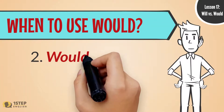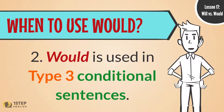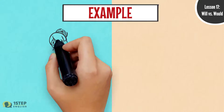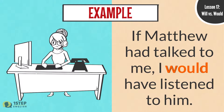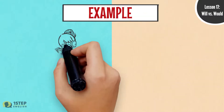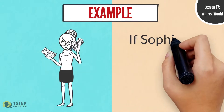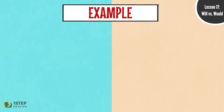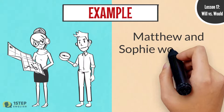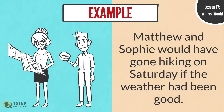When to use Would. Three: Would is used in type 3 conditional sentences. For example: If Matthew had talked to me, I would have listened to him. If Sophie had saved enough money, she would have bought a new car. Matthew and Sophie would have gone hiking on Saturday if the weather had been good.